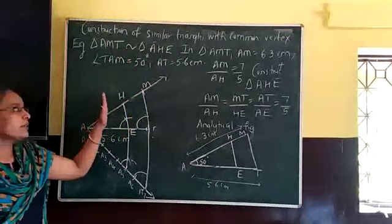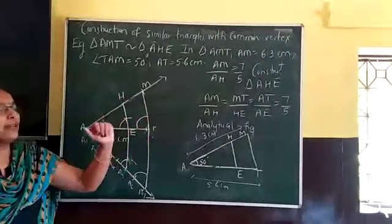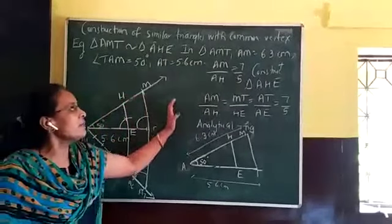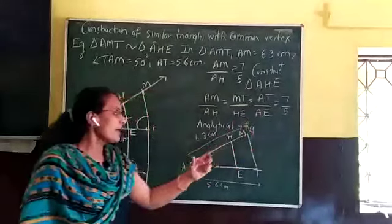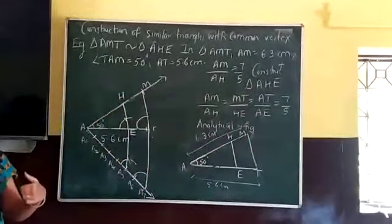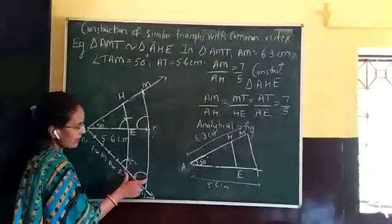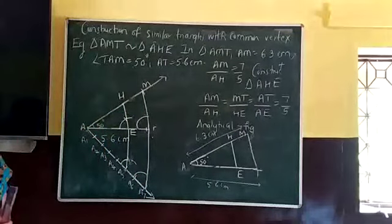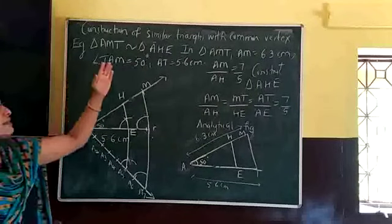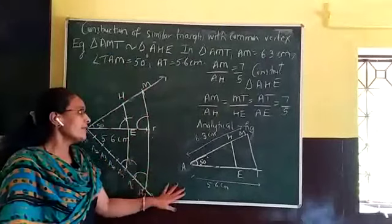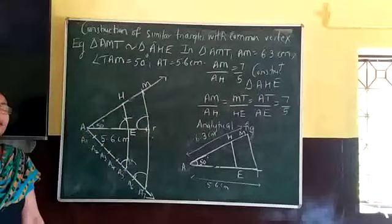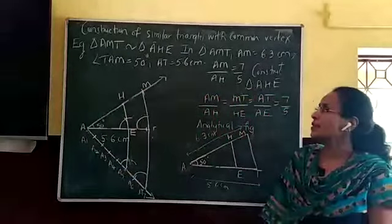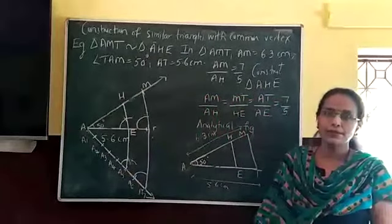These sums are important — most probably worth four marks. So more practice is needed, more understanding is needed, and proper observation of the ratios is needed so that you understand which triangle is outer and which is inner. These lines must be parallel — only if the lines are parallel will the triangles become similar. This is how we construct similar triangles with a common vertex. In the next video, we will be seeing construction of tangents. Thank you.